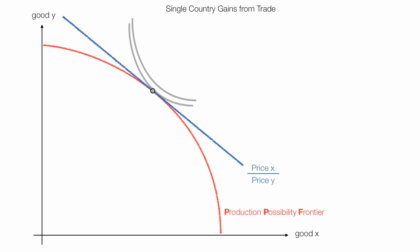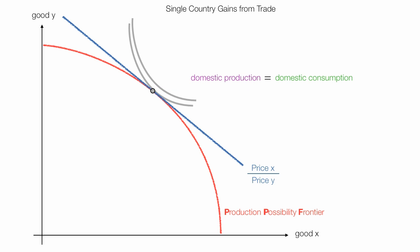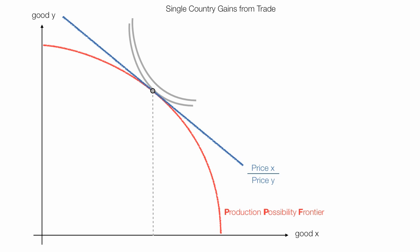The point where the production possibility frontier, the ratio of price X to price Y, and the indifference curve all intersect — marked with a little gray dot — is the level of domestic production and the level of domestic consumption. At this point, domestic production equals domestic consumption. Imports are zero and exports are zero. The country consumes everything it produces: X1 of good X and Y1 of good Y.